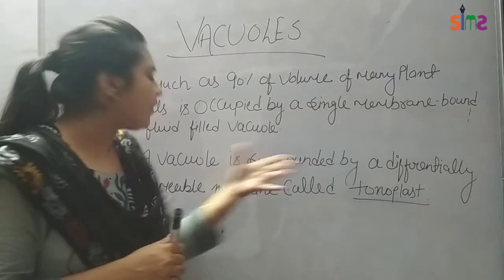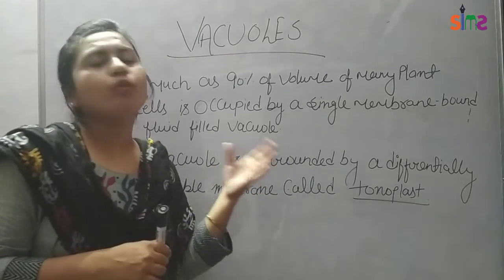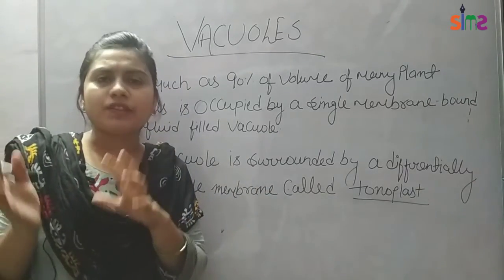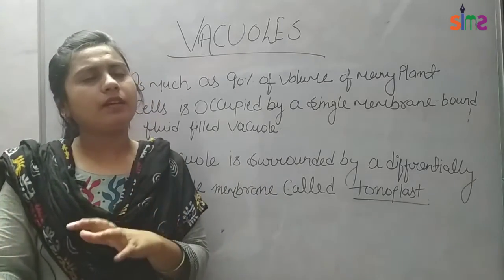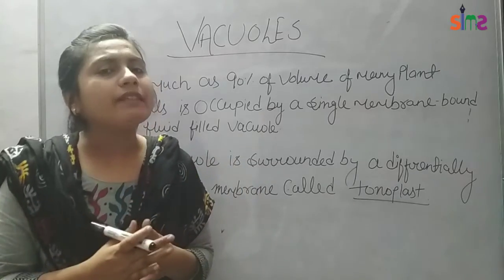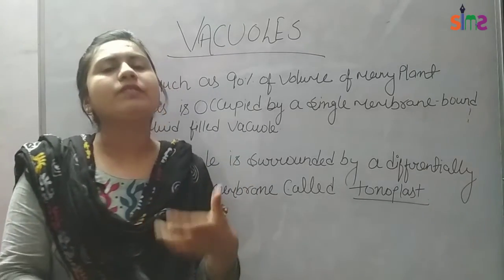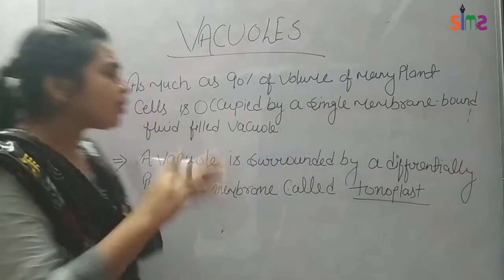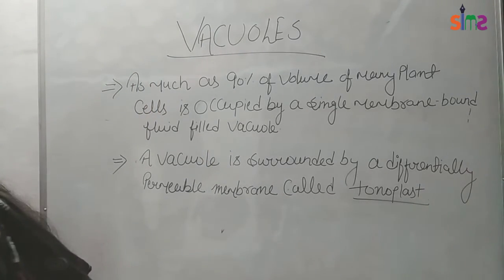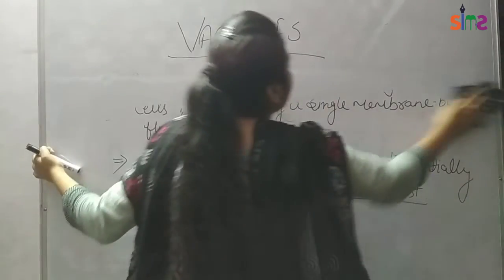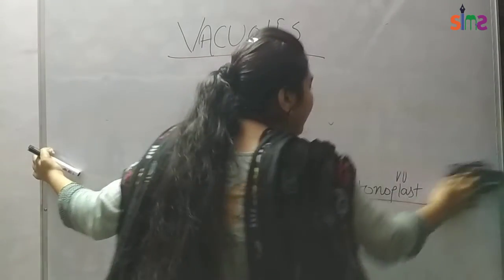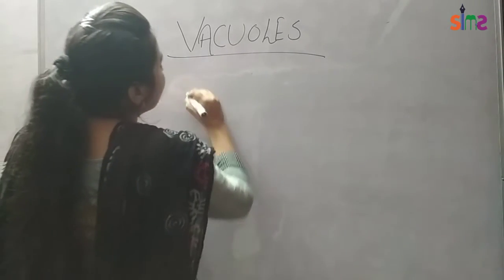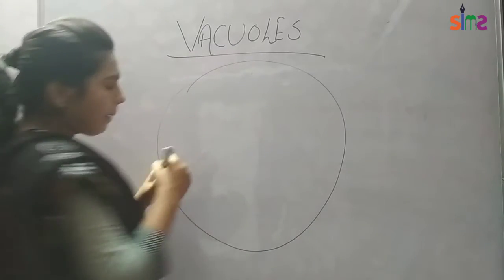A vacuole is surrounded by a differentially permeable membrane called the tonoplast. Just as the plasma membrane controls what substances can enter and exit the cell, the tonoplast also shows permeability — controlling what substances enter and exit the vacuole. If we draw it, the vacuole has a membrane which we call the tonoplast. In a plant cell, this centrally located vacuole is surrounded by the tonoplast.